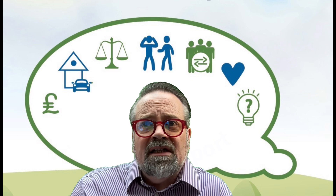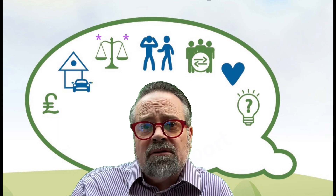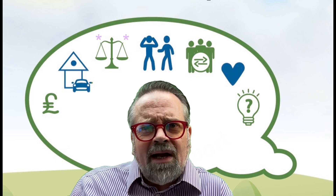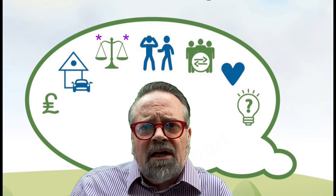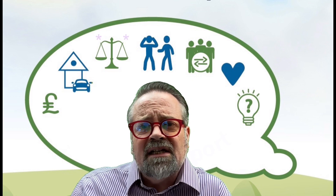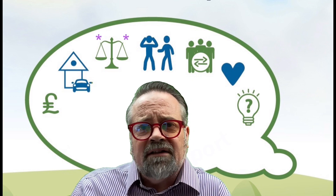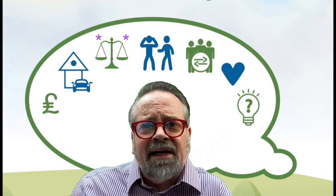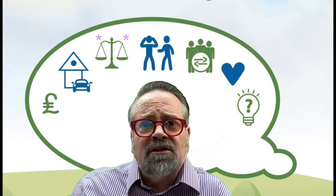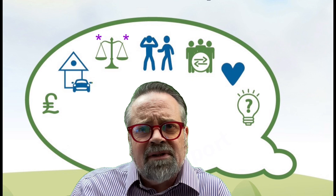The symbol of the scales of justice helps us to think about legal power. Legal power might help us — for example, we might have a restraining order against somebody. But legal power might also get in the way; it might be that we have no recourse to public funds because we failed in an asylum seeking application, and that legal situation makes it harder to survive. Legal power might help and legal power might hinder, and the same person might have some helpful and some unhelpful bits depending on their experience of life.